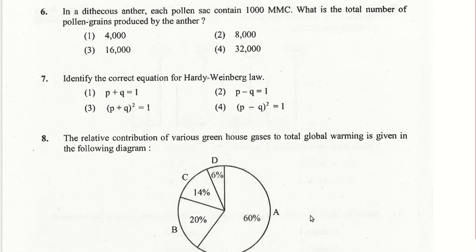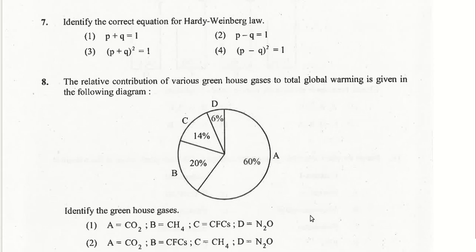The relative contribution of various greenhouse gases to global warming: carbon dioxide is 60%, methane is 20%, chlorofluorocarbons are 14%, and nitrous oxide is 6%. So the first option is the right answer for question 8.